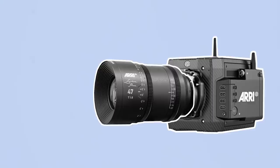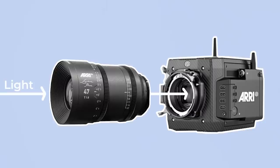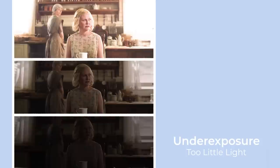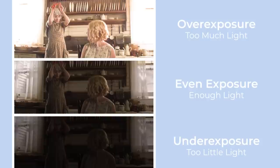Exposure refers to how dark or light an image is. This is determined by the amount of light that goes through the camera's lens and hits the sensor where the image is recorded. A dark image with too little light is underexposed, a bright image with too much light is overexposed, and an image with enough light is evenly exposed. A camera has four variables that can be changed to alter its exposure: EI, shutter angle, aperture, and neutral density filters.